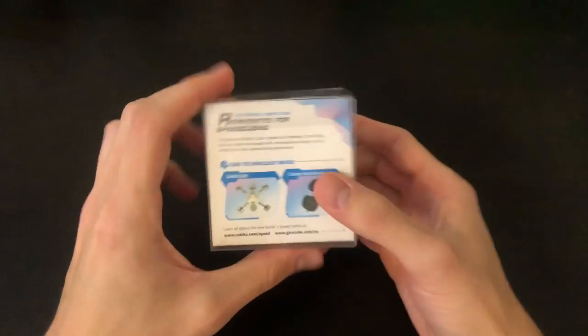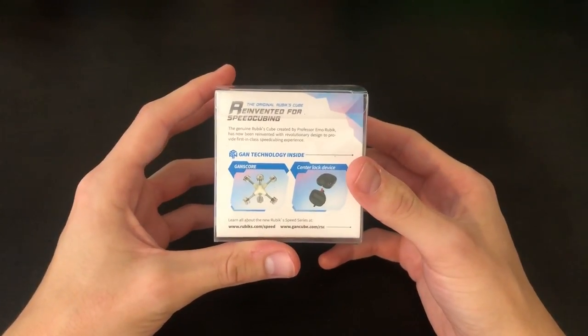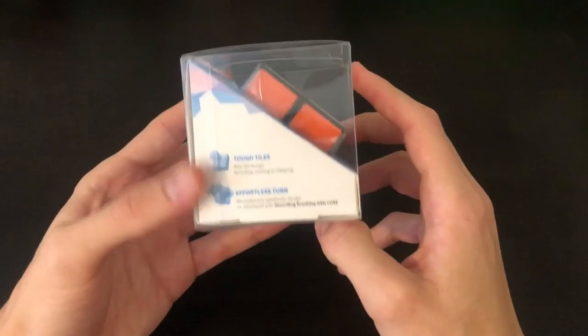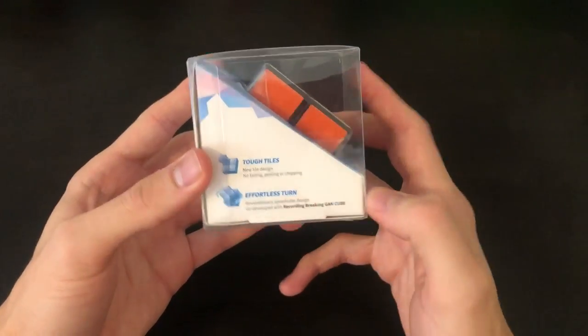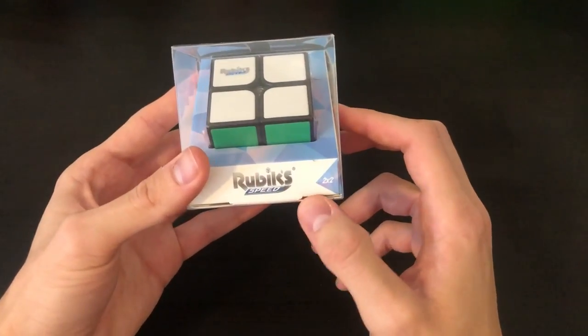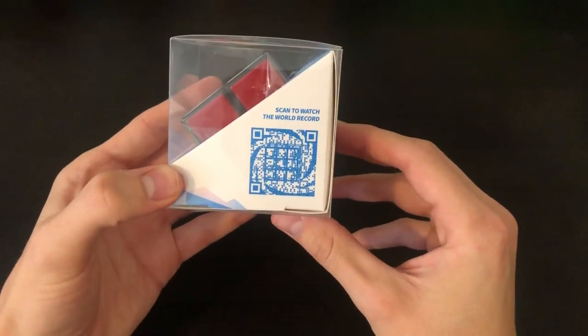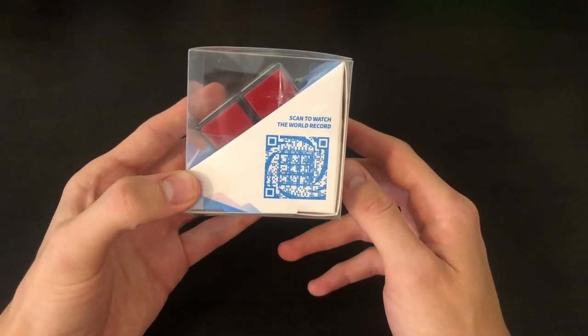But first, just taking a look at the packaging on the back. We have Reinvented for SpeedCubing. It looks like it is using a GAN core. It looks like it is partnered with GAN. We have tiles, effortless turning, Rubik's Speed 2x2. On the side we have a little QR code if you guys are interested in scanning that. I'm curious to know what that actually scans to.